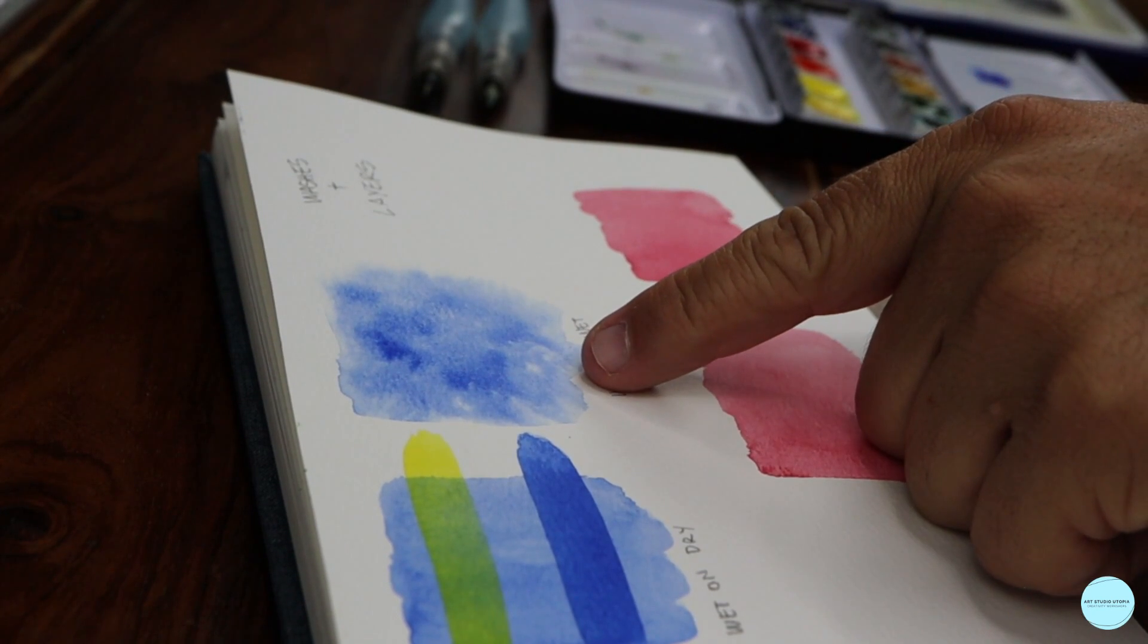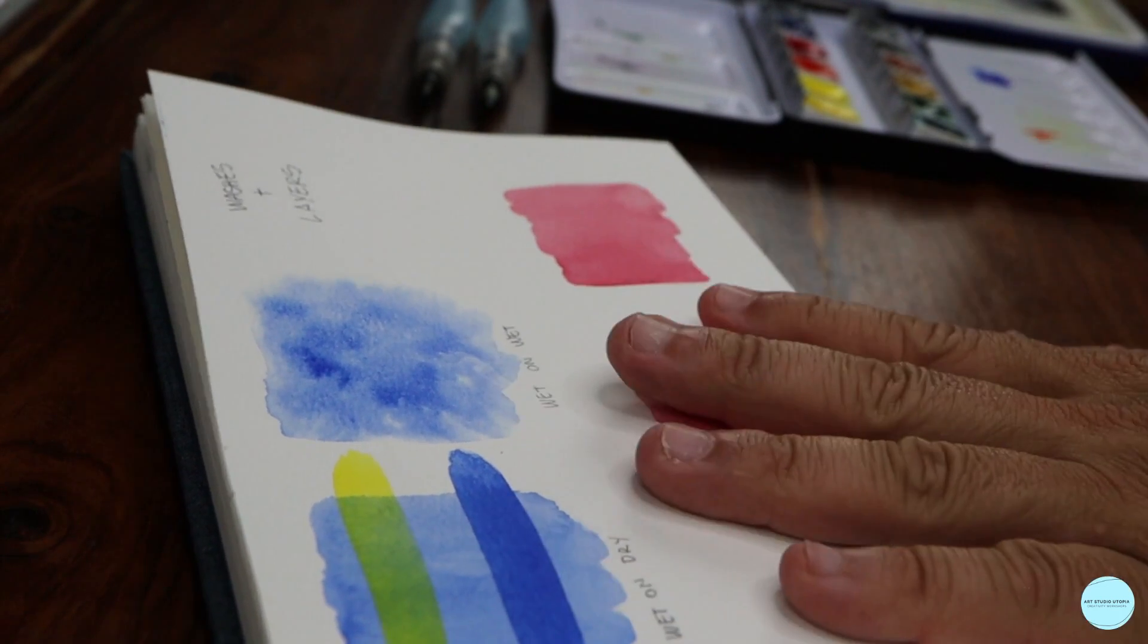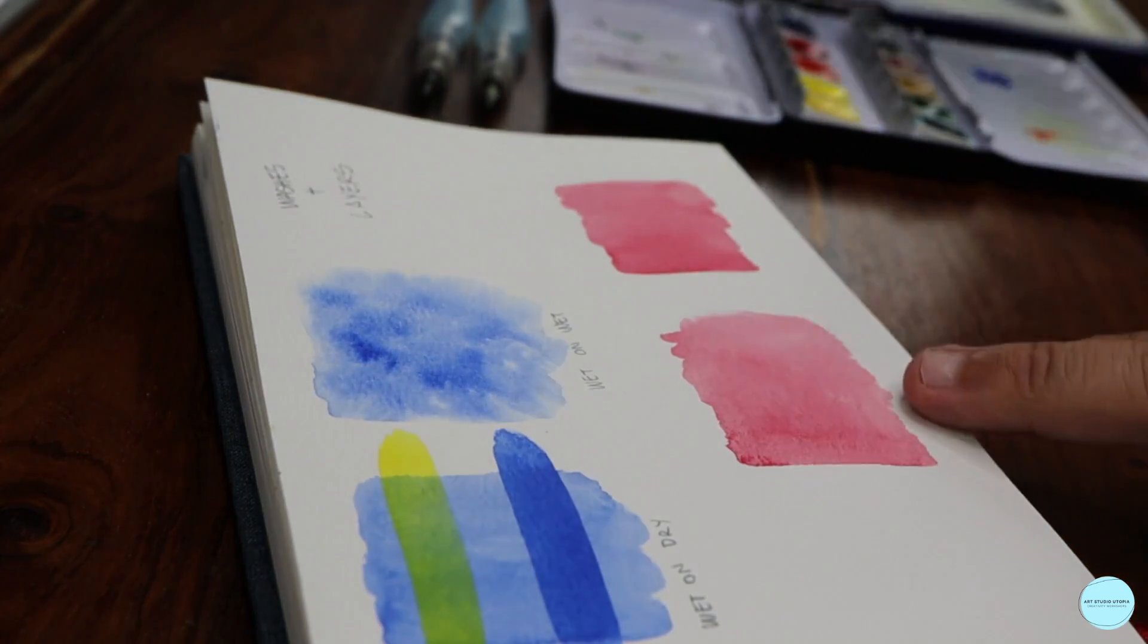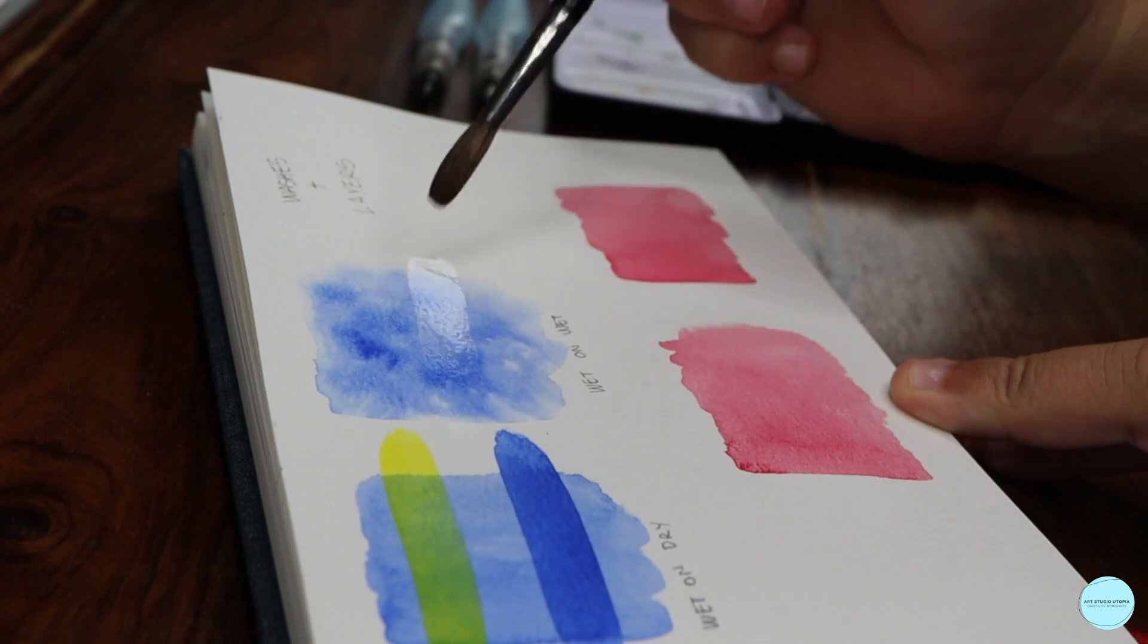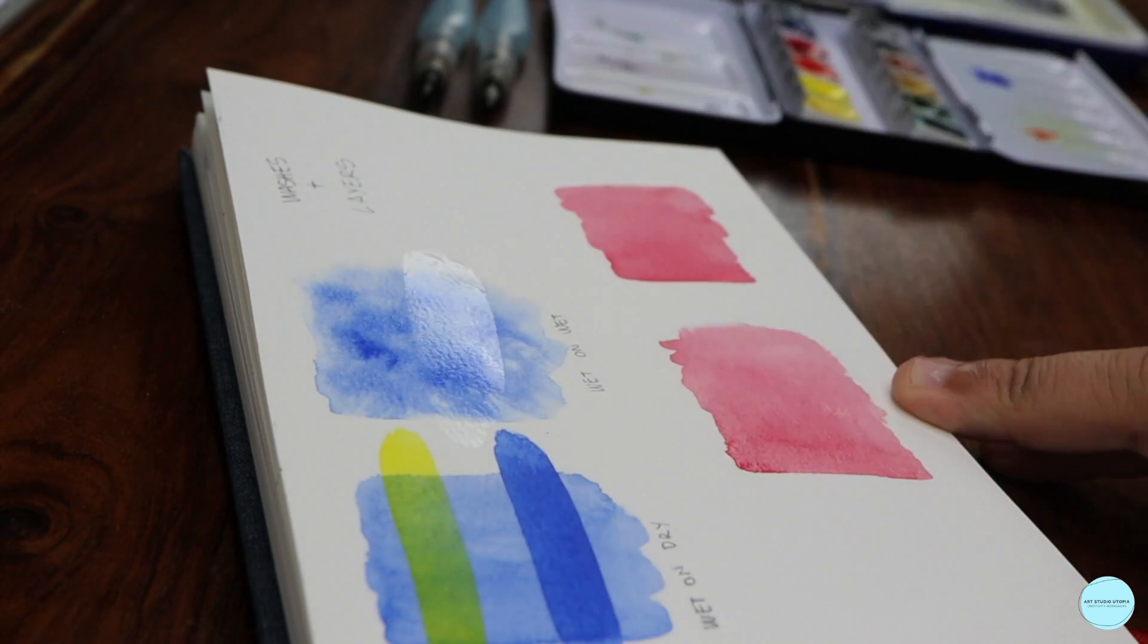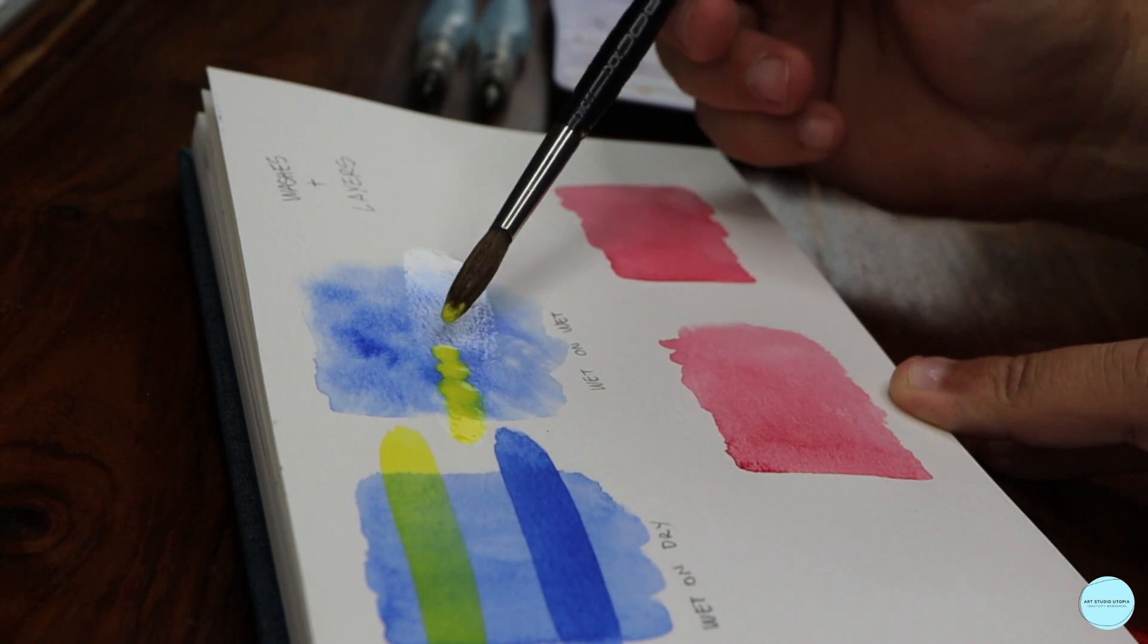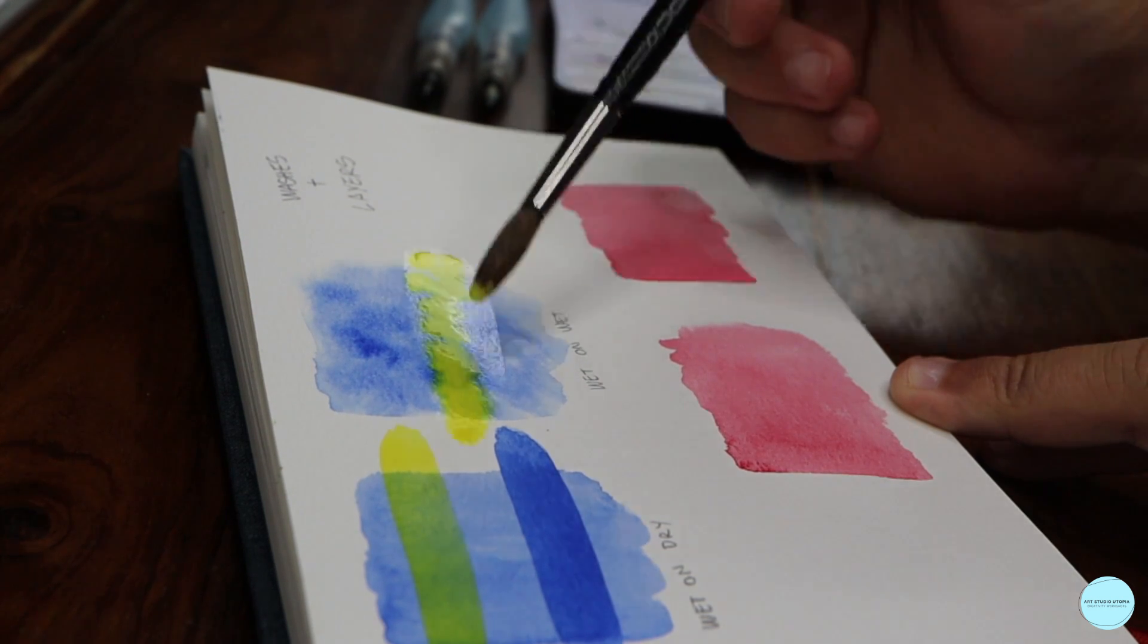This was wet on wet. You could see the difference, hopefully, from a flat wash wet on dry and this one that's wet on wet. So now it's fully dry, but I could still do a wet on wet layer. How? Water. Lay it down very carefully without rubbing too hard. I lay it down right on top of it, and then bring my pigment, and it does the wet on wet.